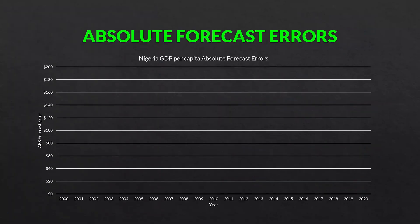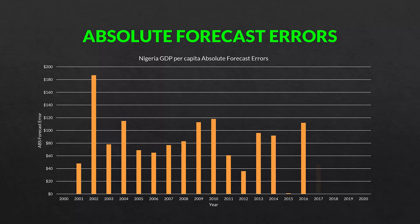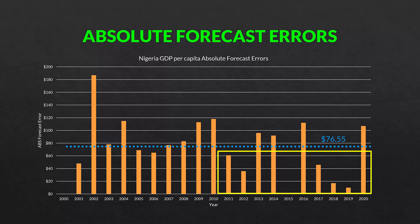Let's go back to the previous video briefly to show how these things fit together. Here are the absolute forecast errors for each year — all we do is make everything positive to see the magnitude of each error over time. The average of these mean absolute errors was $76.55. On the right side, the absolute forecast errors are relatively smaller than the first half because the time series flattens out. When the time series flattens out horizontally, the gap between actual and naive forecast is much smaller than when there is a trend or seasonal pattern.